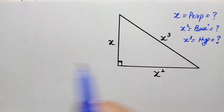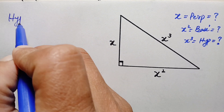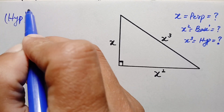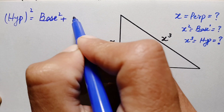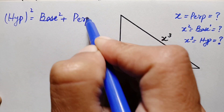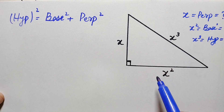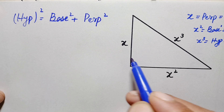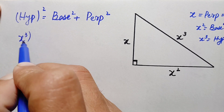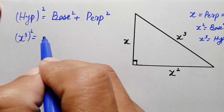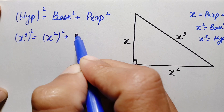So by the Pythagorean theorem, hypotenuse squared equals base squared plus perpendicular squared. Substituting the values from the figure: our hypotenuse is x³, our base is x², and our perpendicular is x. So this equation becomes: (x³)² = (x²)² + x².